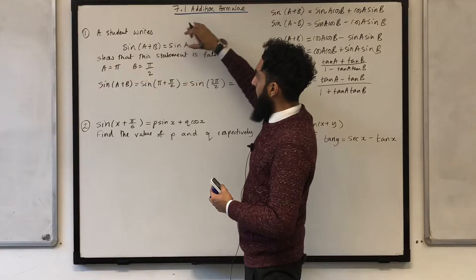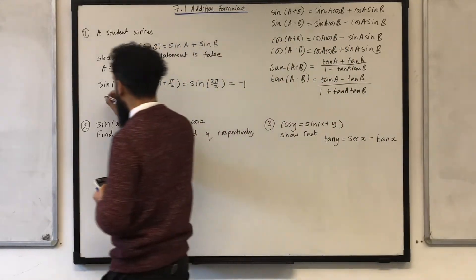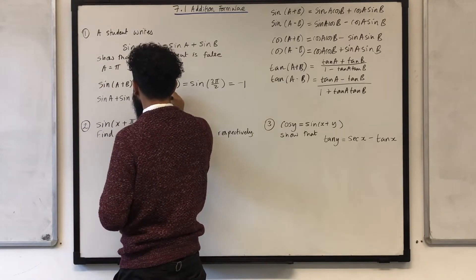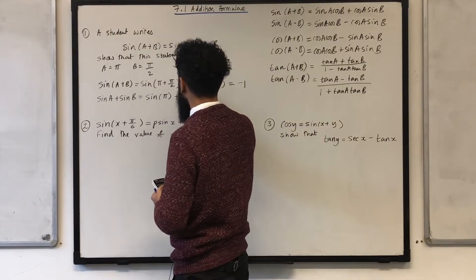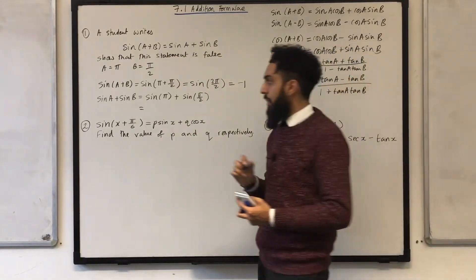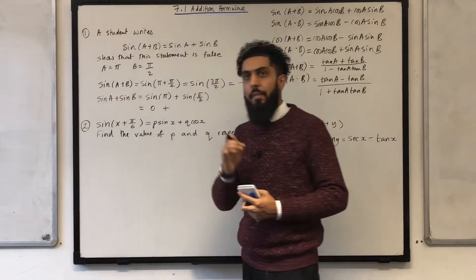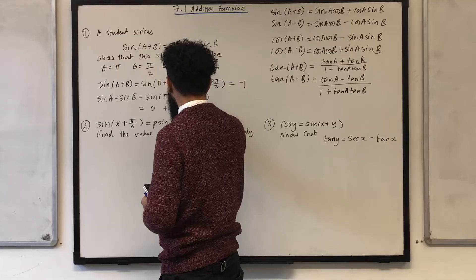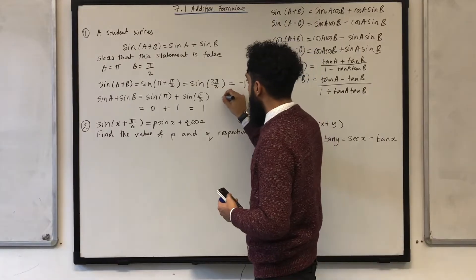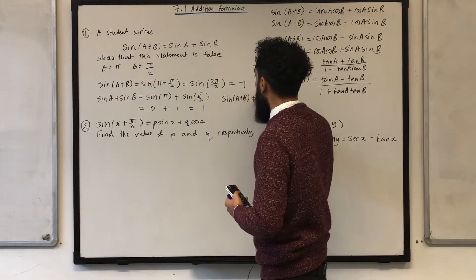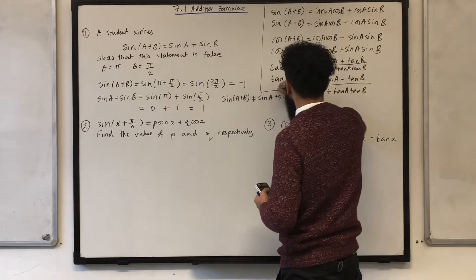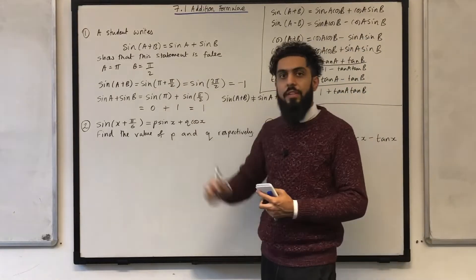Now let's work out sin A plus sin B. Sin π plus sin(π over 2): sin π is 0, and sin(π over 2) is 1, so 0 plus 1 equals 1. Hence I can conclude that sin(A plus B) is not equal to sin A plus sin B. And that completes question number 1.